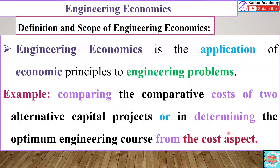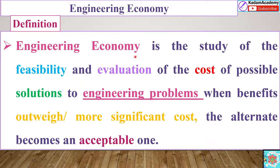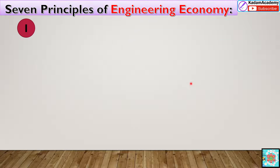There are seven principles of engineering economy. What are those principles? First, make a list of alternative plans — plan A, plan B. Second, identify what different solutions are available among these alternatives. Third, be clear about what you want. Fourth, meet all relevant criteria and develop a common performance measure.